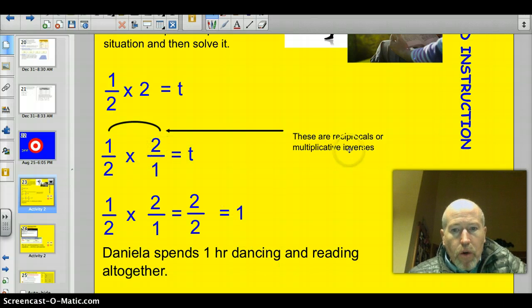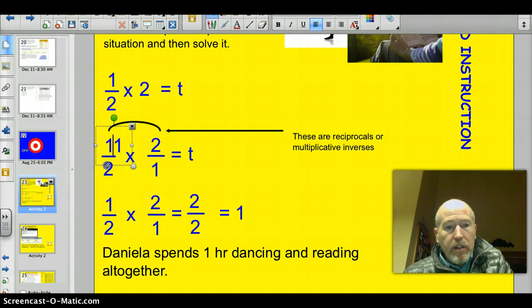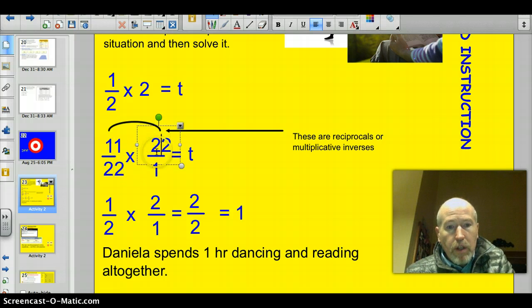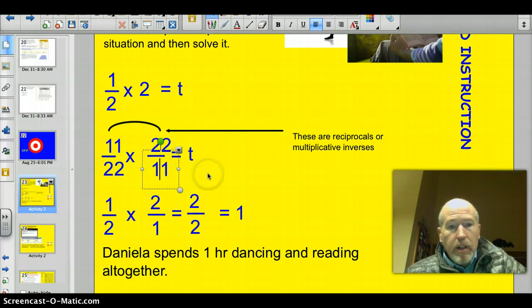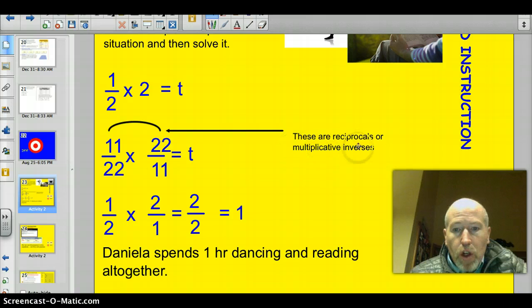Daniella spends one hour dancing and reading all together. But what I want you to notice is that these are reciprocals or multiplicative inverses. Anytime the denominator of one fraction is the numerator of another and the numerator is flipped to the denominator, you're going to get 1. So 1 becomes the denominator, 2 becomes the numerator. They're flipped. But it can be 1, I could change this to 11, I could change this to 12, or to 22. See how I flipped them? Whenever you have that, these are called reciprocals or the multiplicative inverses. You're going to get 1 when you multiply these together. Always. That's what we're going to be talking about tonight.